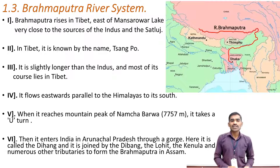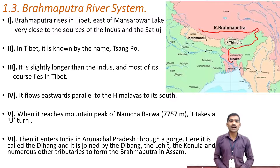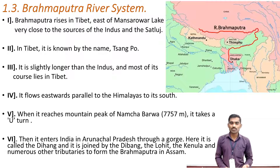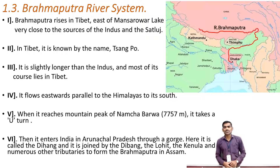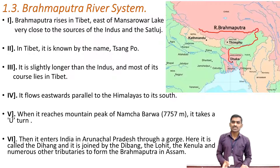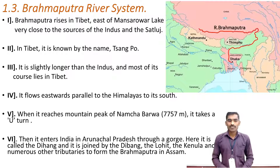In Tibet, the Brahmaputra flows mostly through the Tibet area and is known by the name Sangpu river. It is slightly longer than the Indus river and is also among the largest. Most of its course lies in the Tibet area.